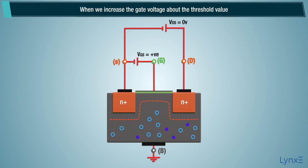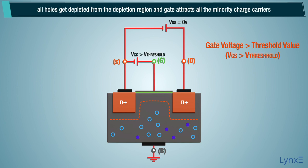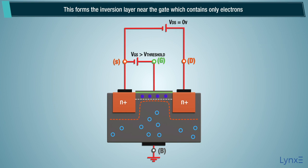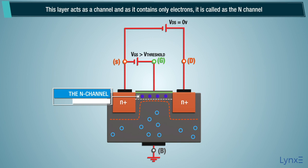When we increase the gate voltage about the threshold value, all holes get depleted from the depletion region and gate attracts all the minority charge carriers. This forms the inversion layer near the gate which contains only electrons. This layer acts as a channel, and as it contains only electrons, it is called as the N channel.